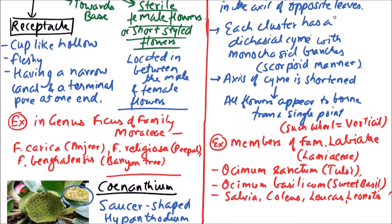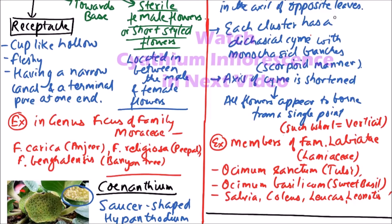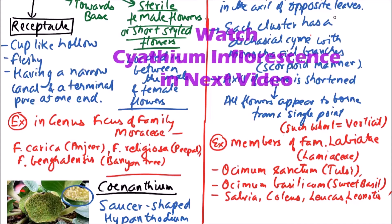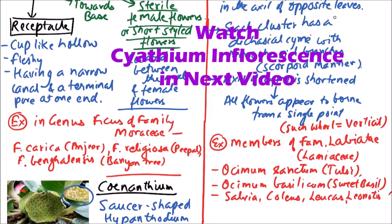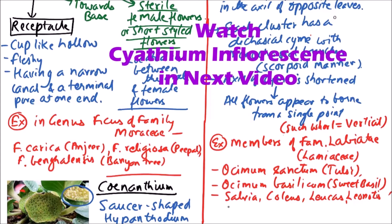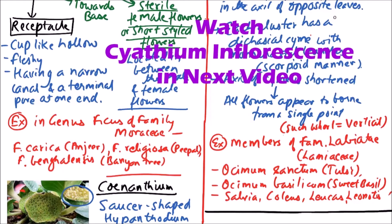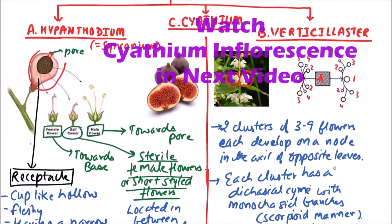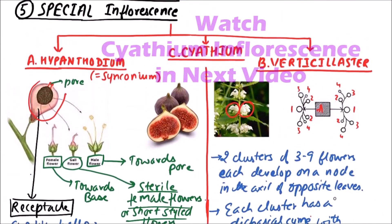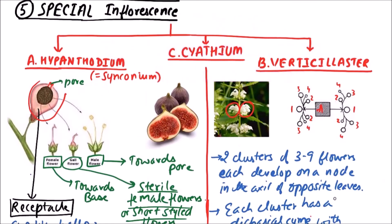So these are the various points and examples of inflorescence. In the next video, we will discuss the cyathium type of inflorescence. Thanks for watching this video.